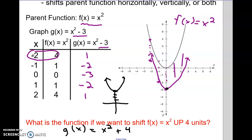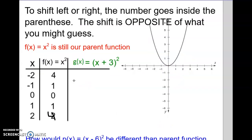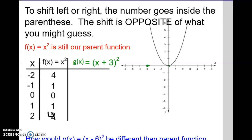The number on the end makes it go up or down. Next up is left or right, and this is confusing. It's basically the opposite of what you'd think. To make it go left or right, the number needs to be inside the parentheses with x. The trick is it's actually opposite of what you'd expect: a plus 3 inside would make x increase by 3, so you'd expect a shift right 3, but actually the plus 3 inside makes it go to the left 3.